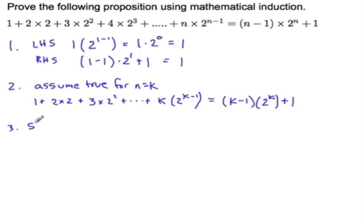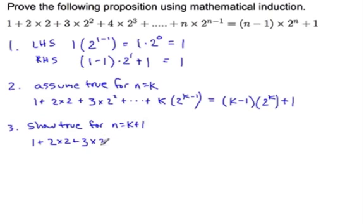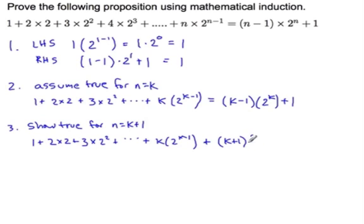And the next step: show true for n equals k plus 1. So we have this exact same statement, plus 1 more term. There's 1 more term here — it's the k plus 1th term. So it should be k plus 1 times 2 to the k plus 1 minus 1, so I'll just write 2 to the k.